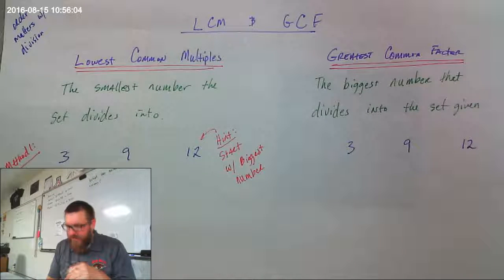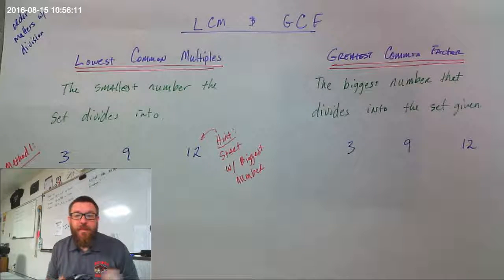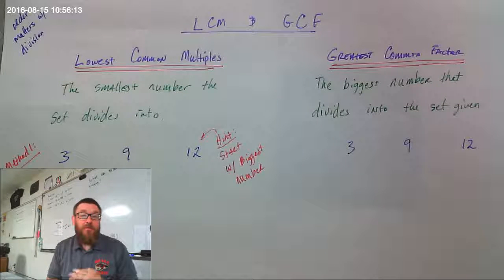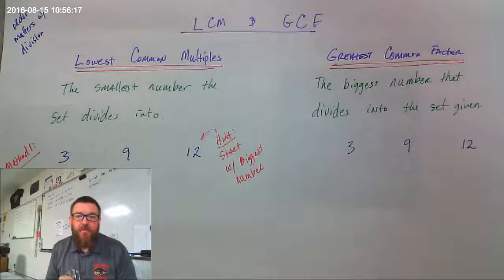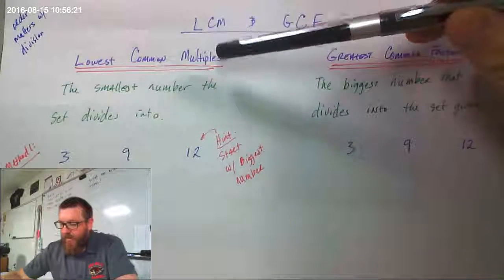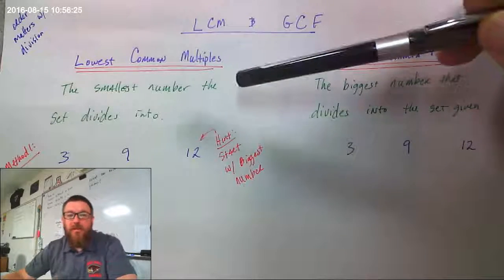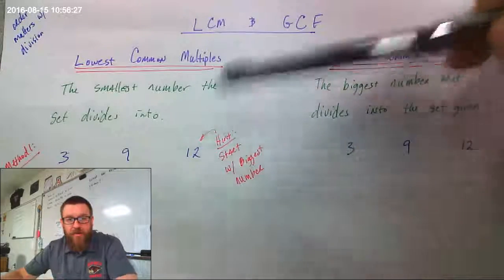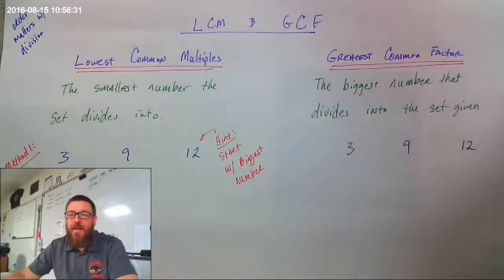We're going to do a quick video here on how to find lowest common multiple and greatest common factor of a set of numbers. When you're talking about lowest common multiple, what it's asking is: what's the smallest number that everything in your set of numbers divides into without any leftovers?